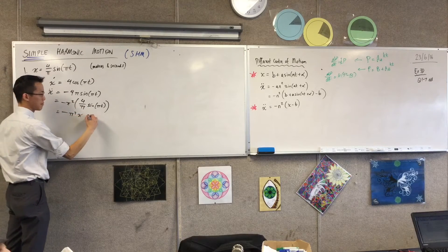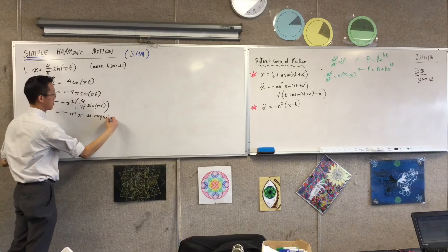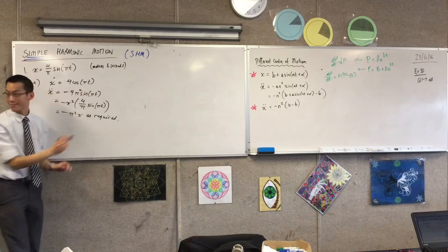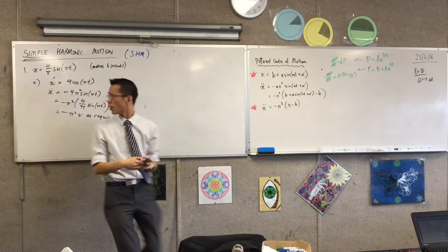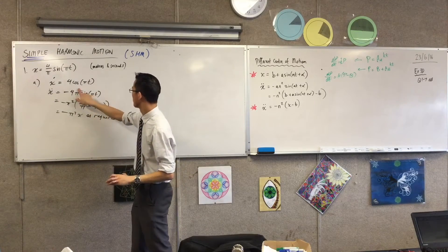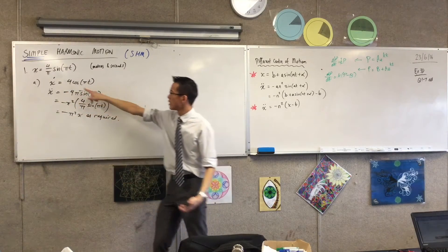Wait, so did you forget to write pi squared for the first line? Uh, yep. Okay, wait, no, wait, what? No, no, no, no, I got it right, because it's four, it's four.